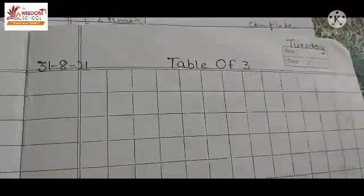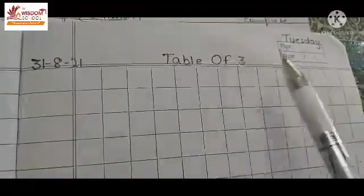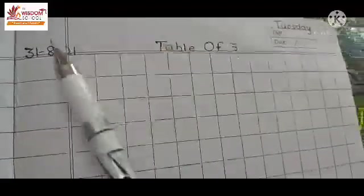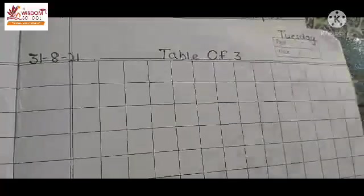Today we have revised the table of 2. Today we will revise the table of 3. We will write this two times. The date is 31st August 2021 and the day is Tuesday.